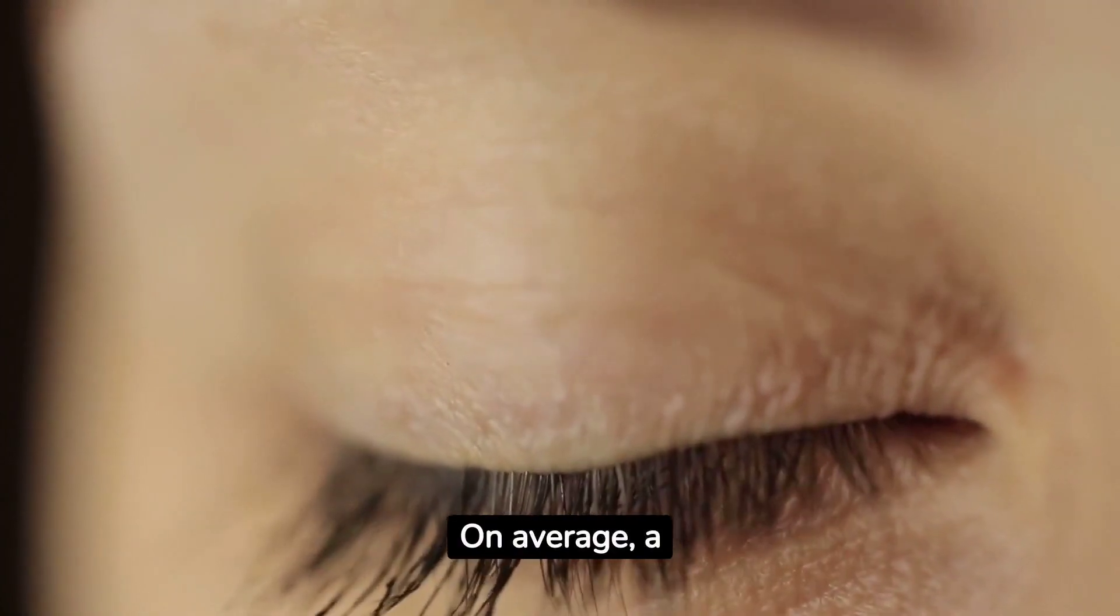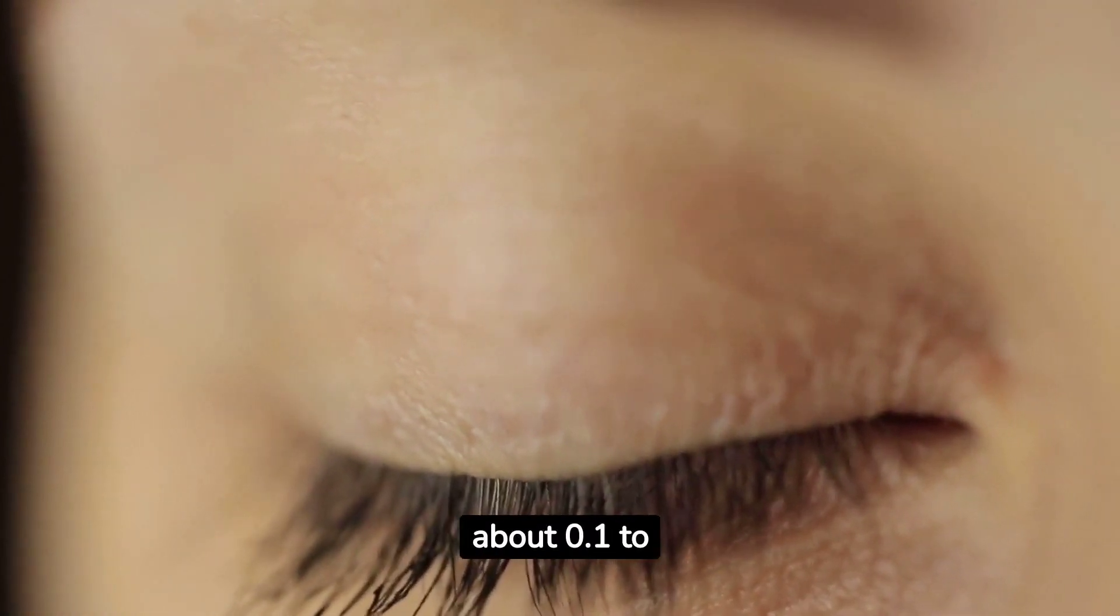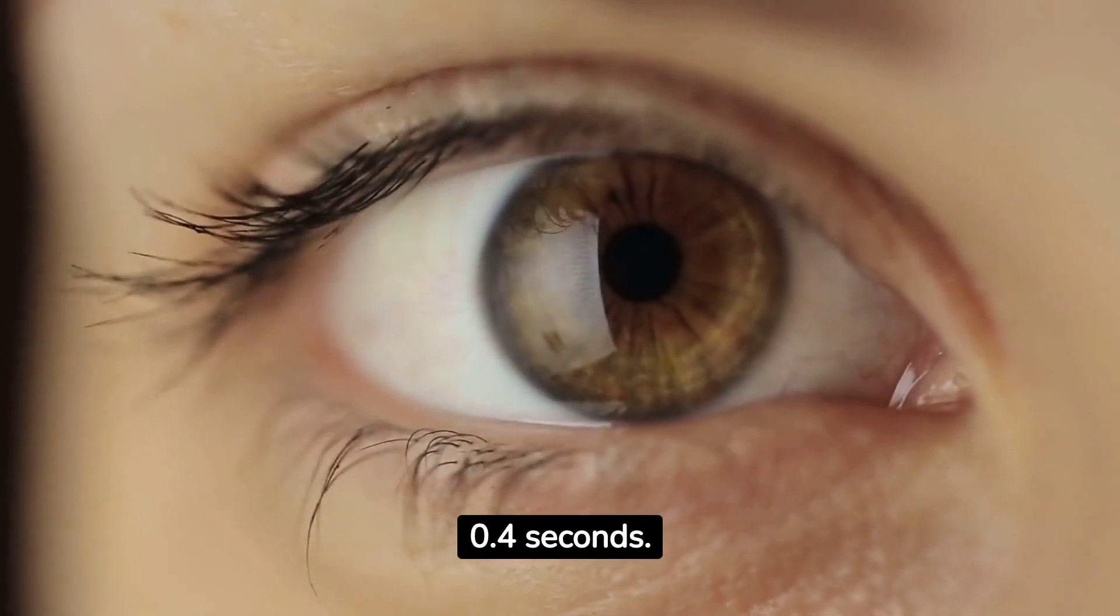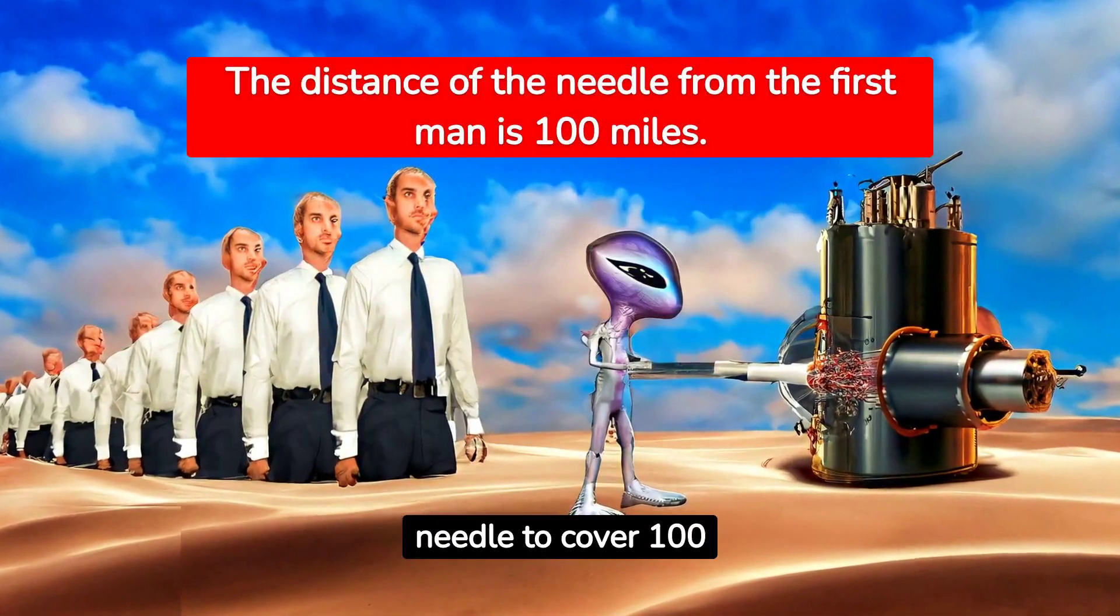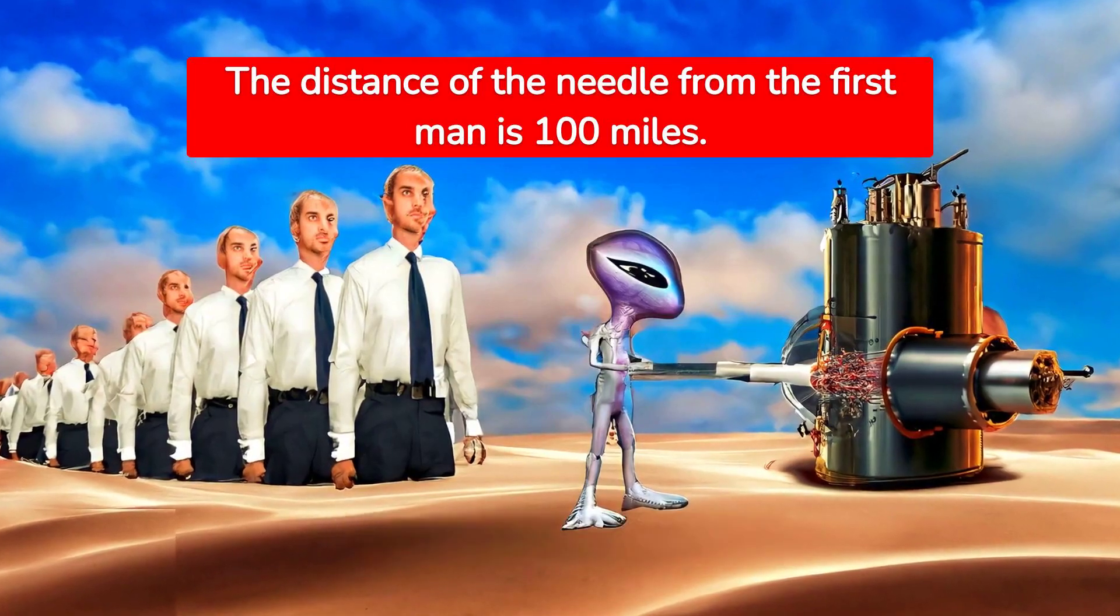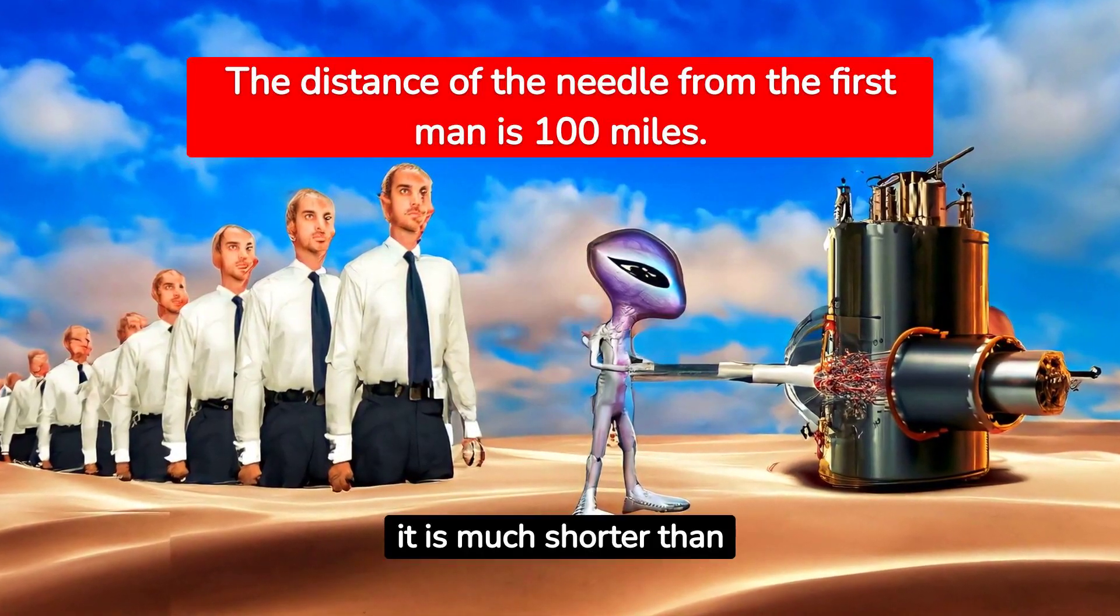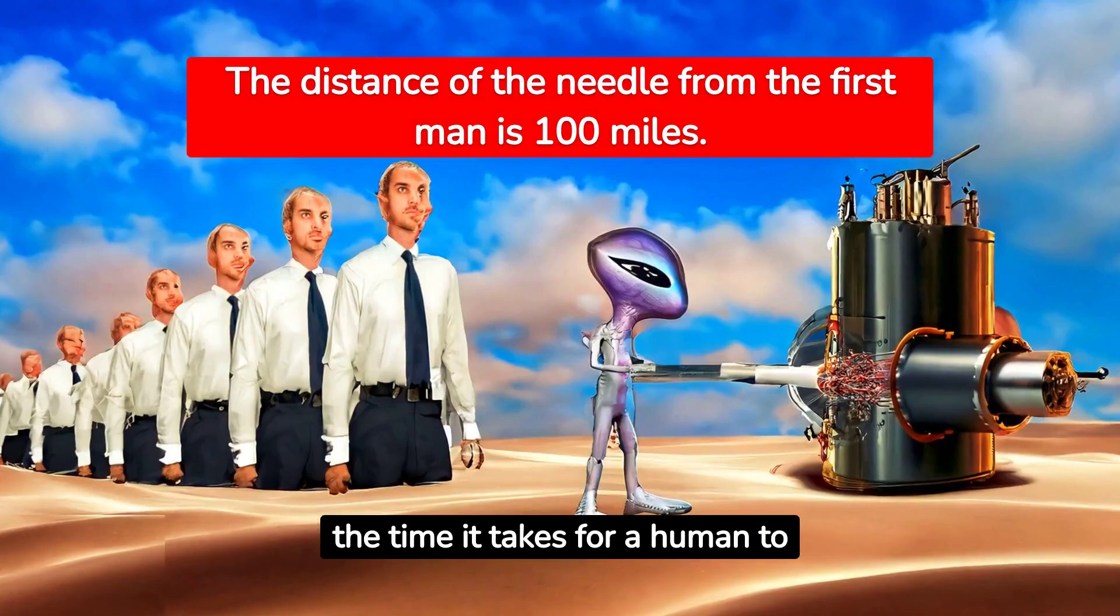On average, a human eye blink lasts about 0.1 to 0.4 seconds. Since the time it takes for the needle to cover 100 miles is only 0.477 seconds, it is much shorter than the time it takes for a human to blink their eyes.